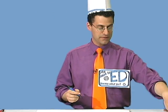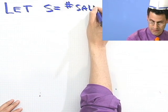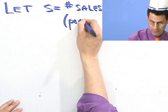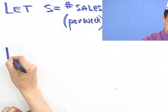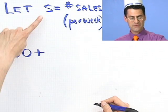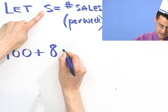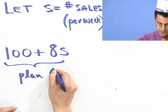Let's take a look and see how you'd play this out. Let's suppose that the number of sales I actually make is S — so let S equal the number of sales I make per week. With Plan A, I get $100 for the week plus $8 for each sale. So in one week I'd get that $100 plus $8 times S dollars. This is my total for Plan A.